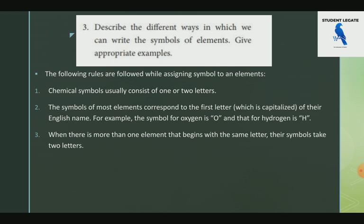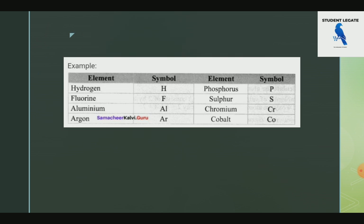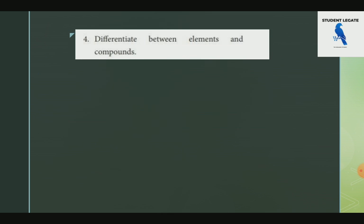When there is more than one element starting with the same letter, we take a second letter and add it to the symbol. The first letter is capital and the second letter is small. For example, the symbol 'Fe' has capital F and small e.